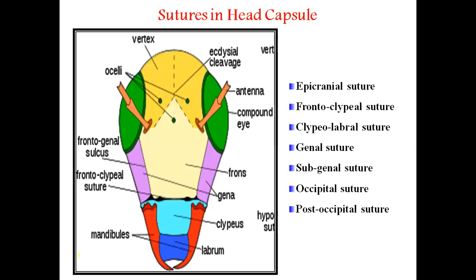Now let's look in detail at the sulci or sutures in the insect head capsule. The sutures present are: epicranial suture, frontoclipeal suture, clypeolabral suture, genal suture, subgenal suture, occipital suture, and post-occipital suture.